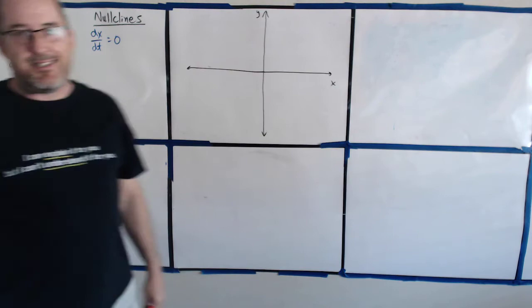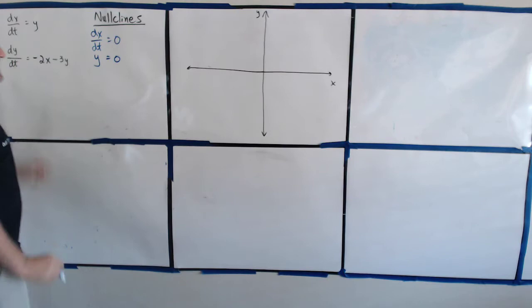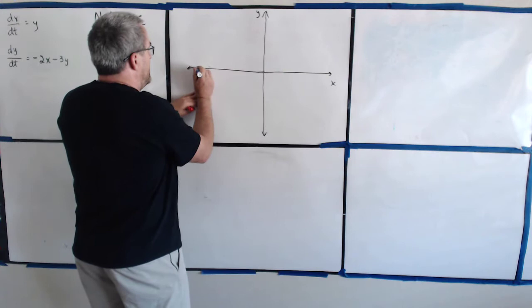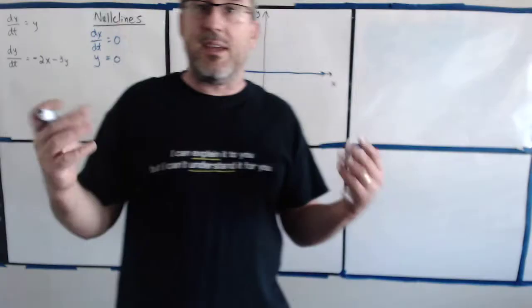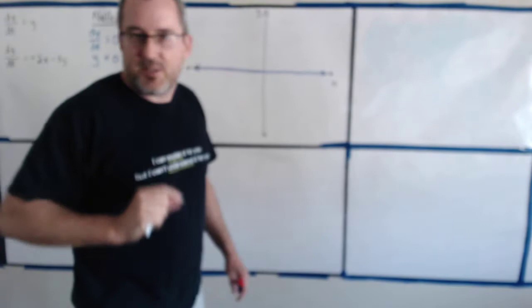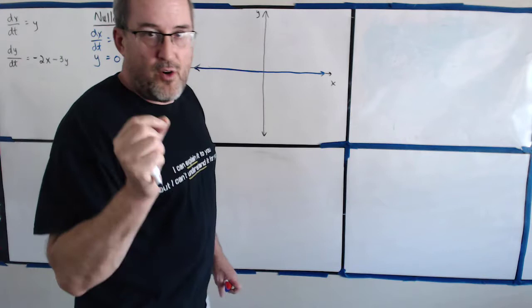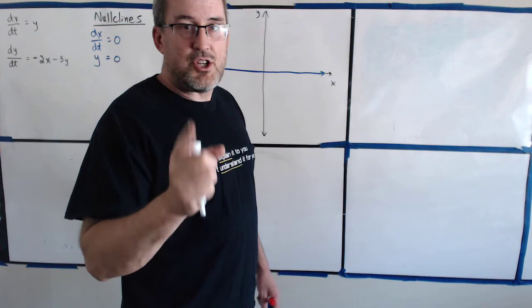Let's start with dx/dt. dx/dt is zero when? Since dx/dt equals y, dx/dt is zero when y equals zero. So in the graph, y equals zero is just the horizontal, aka the x-axis. What we do with the nullcline to communicate to a knowledgeable audience that the nullcline is indicating that dx/dt is zero is we put little hash marks on it, indicating that dx/dt is zero, therefore x is not changing.